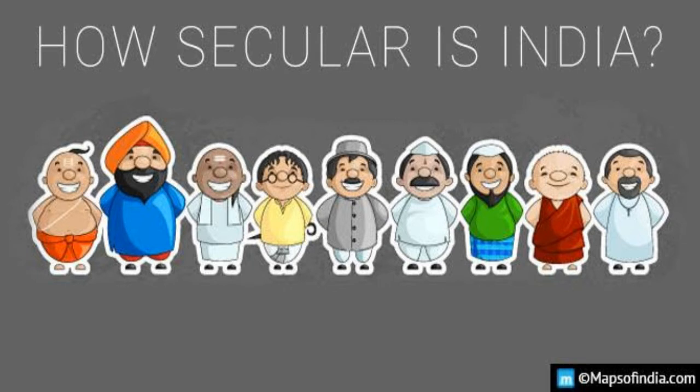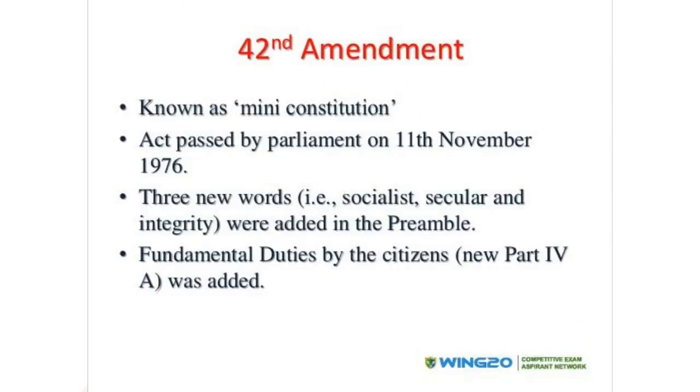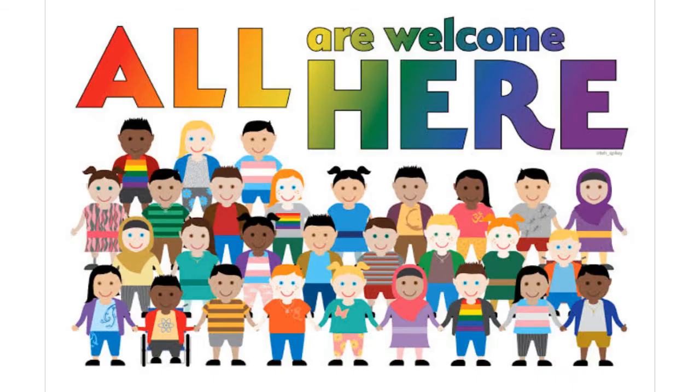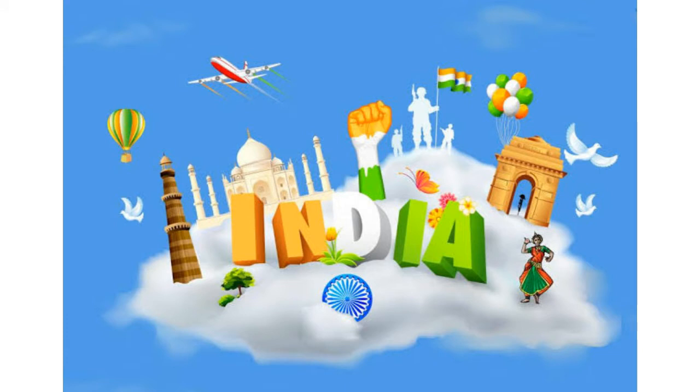Now we will be studying about Indian secularism — how it is practiced. The word secular is added in our preamble as per the 42nd amendment, or we can say in 1976, this concept was added to our preamble. But even before that, India was a secular country because since earlier times, people belonging to different religions have been living together in India and all are getting equal respect. So not just as per the concept, but since a long time, India has been a secular state as all people of all religions are equal before the law.